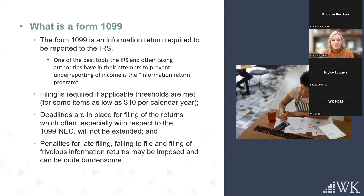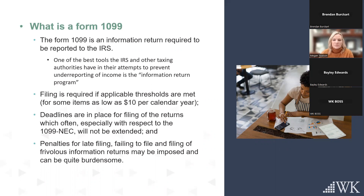Deadlines are in place for filing all of these returns, and unfortunately, unlike some other business returns, these cannot be extended. The IRS uses these for matching and typically wants them out by January 31st so that when people file their tax returns, they can automatically do the matching to ensure income is being reported. There are penalties for late filing or filing of incorrect information — frivolous amounts or non-filing is the biggest concern.